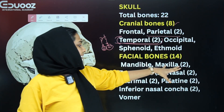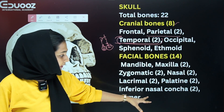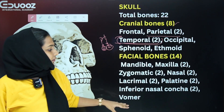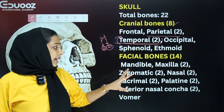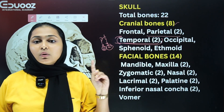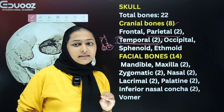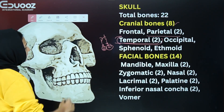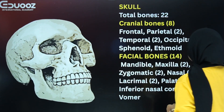The zygomatic is 2, lacrimal is 2, palatine is 2, inferior nasal conchae is 2, and then the vomer is 1. You can use a mnemonic or bracket method to remember these facial bones for your exams and classes.